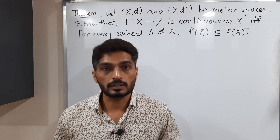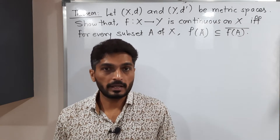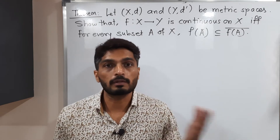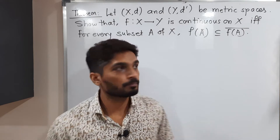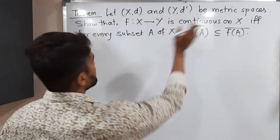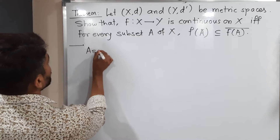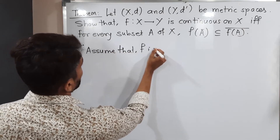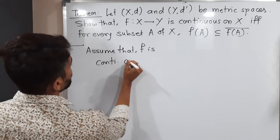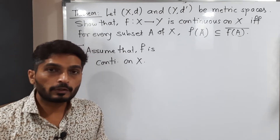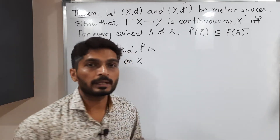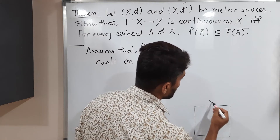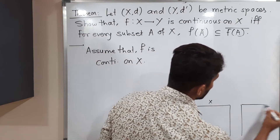We will add one more definition to our list. Since it is an if-and-only-if statement, we will first assume one part and prove the second, then assume the second and prove the first. Let us start the proof. Assume that f is continuous on X. Let me draw all these things so we can easily understand what is happening. We have two metric spaces: X,d and Y,d'.